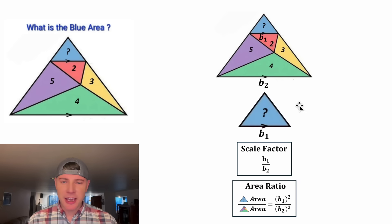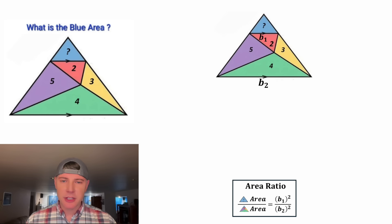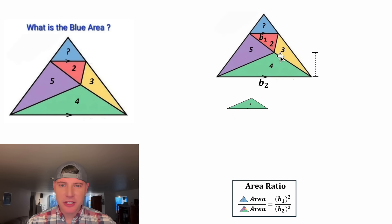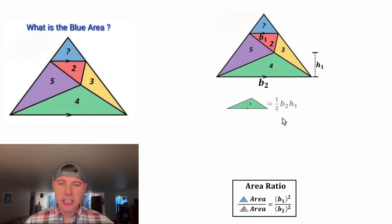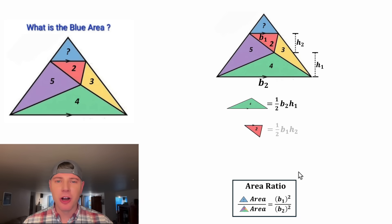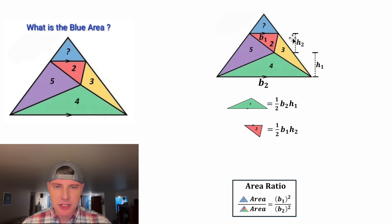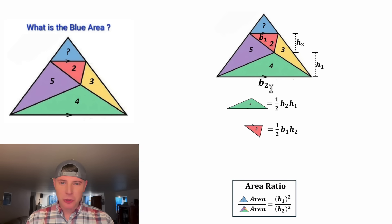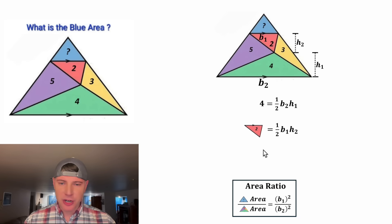I think we're done with all the angles — we probably don't need those anymore. Next, let's focus on this green triangle. Let's construct the height of this triangle and label it H sub 1, so the area of this triangle will equal one-half base times height. And then we can do the same thing for the red triangle. Let's construct its height and label it H sub 2. The area of this triangle will also be one-half base times height, or in other words, one-half of B sub 1 times H sub 2. The area of the green triangle is 4 and the area of the red triangle is 2.